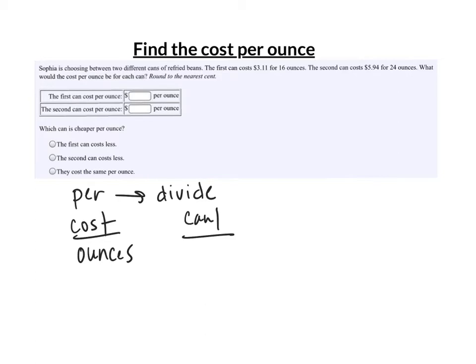It is three dollars and eleven cents divided by the ounces, sixteen. Cost per ounce, we divide by the ounces. We use our calculator, we get point one nine four and some other decimals. These are the important ones.